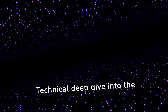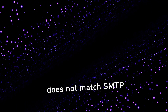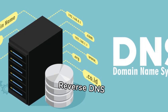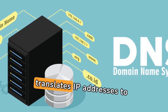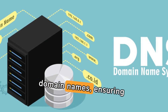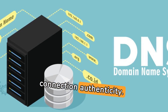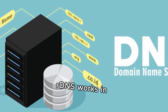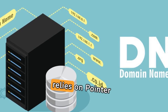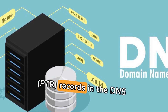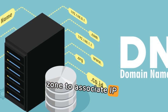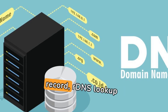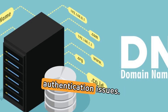Technical deep dive — how reverse DNS works. Reverse DNS lookup translates IP addresses to domain names, ensuring connection authenticity. Unlike standard DNS, which converts domain names to IP addresses, reverse DNS works in reverse. It relies on PTR records in the DNS zone to associate IP addresses with domain names. Without a correctly configured PTR record, reverse DNS lookup fails, leading to authentication issues.